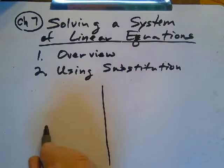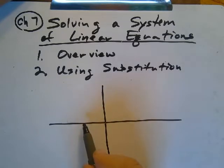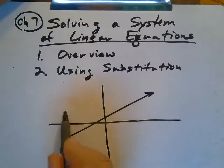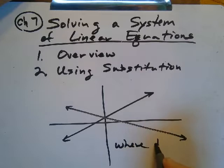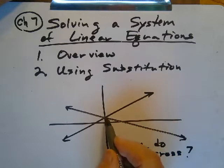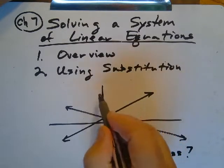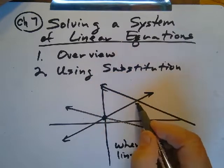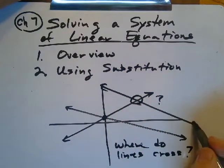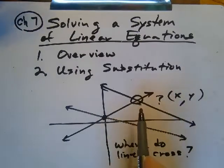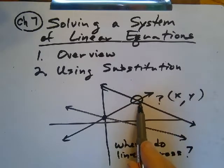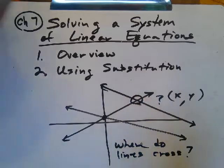Solving a system means we're going to try to find where two lines cross — that's the definition of solving a system. Where do the lines cross? Where do they intersect? We're looking for this point where they intersect, and that spot is going to be represented by an ordered pair, some x-y pair. So when we say where did the two lines cross, we're asking: what is the ordered pair where they cross?